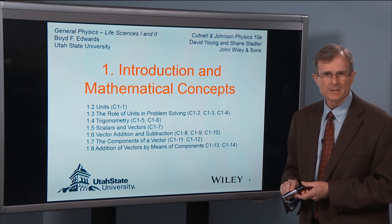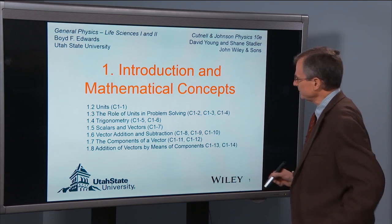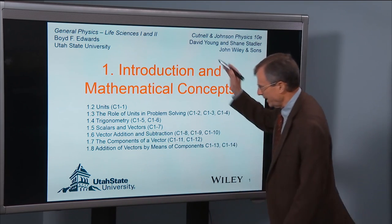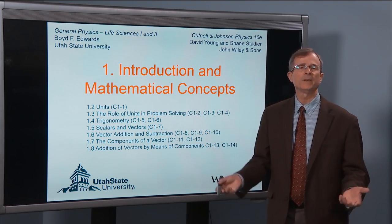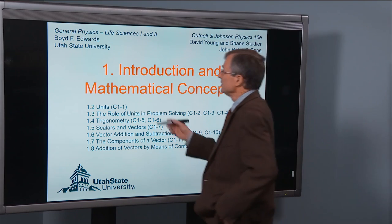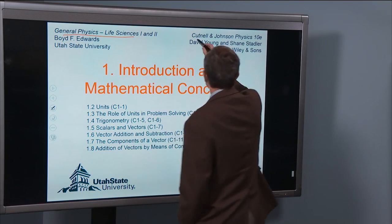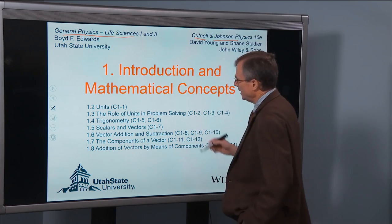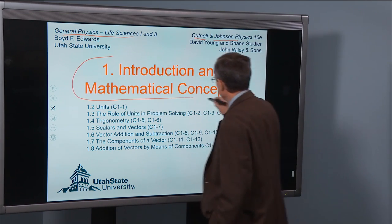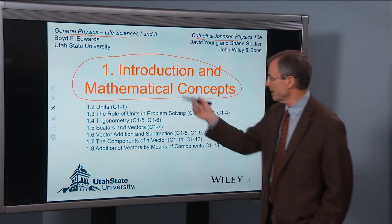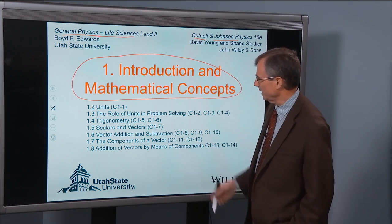By way of introduction, the way these lectures will work, this is the title slide that you'll see at the beginning of each chapter. So it names the book that we're using, the Cutnell and Johnson. This is in red, bold red is the chapter title. So it's chapter 1 and the title of the chapter.